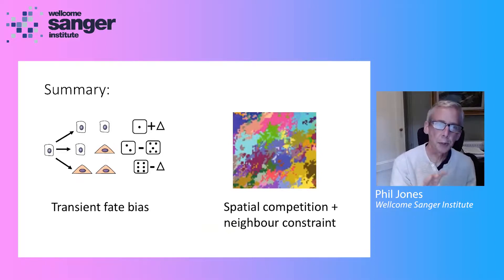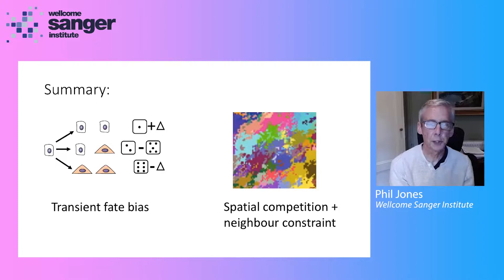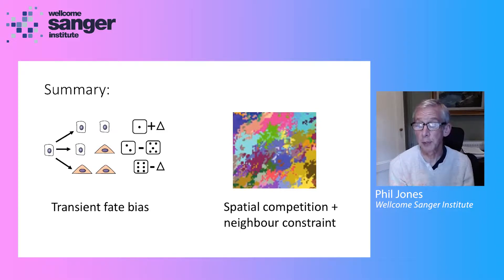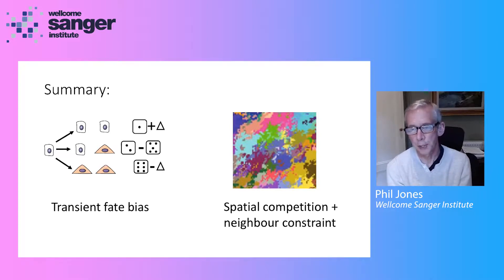To summarise this part of the talk: mutations spread through normal tissues by transiently biasing normal progenitor cell fate towards producing excess dividing cells. But once the expanding clones collide with each other, there is spatial competition and eventually neighbour constraints, where clones of equal fitness abut each other and the cells within them revert towards homeostatic behaviour.